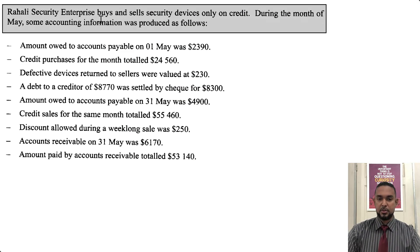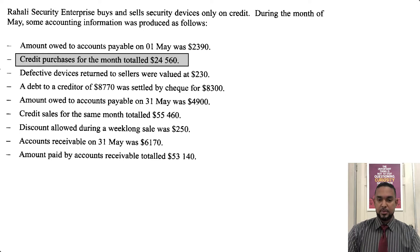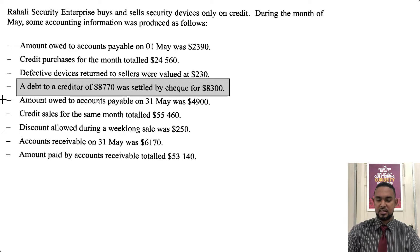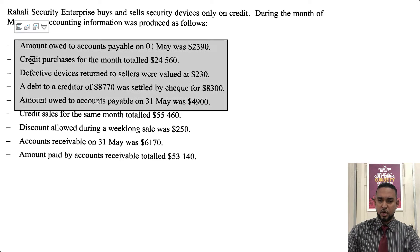So we have here Rahali Security Enterprise buys and sells security devices only on credit. During the month of May, some accounting information was produced as follows. Amounts owed to accounts payable on 1st of March — that's the opening balance for the creditors control account. Then we have credit purchases. This item here, defective devices returned to sellers — that looks like returns out. Next, a debt to a creditor of 8770 was settled for a cheque of 8300, so you receive discount. Amounts owed to accounts payable at the end of the month — this information seems to be what we'll use for our creditors control account.